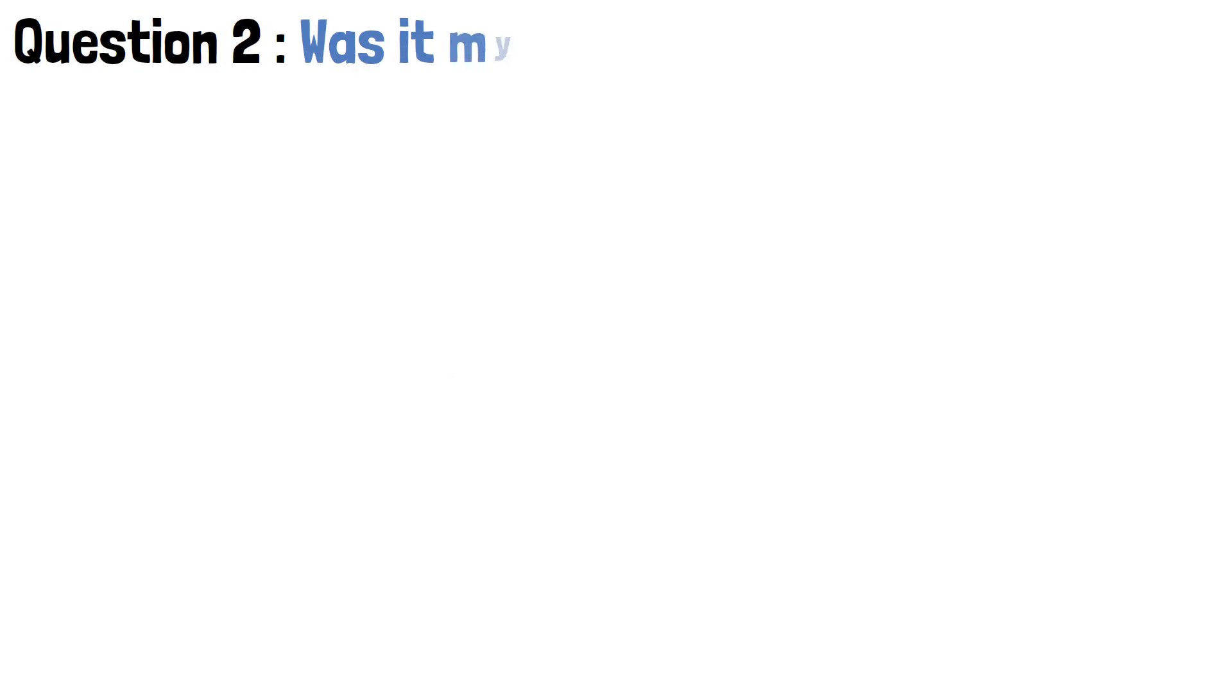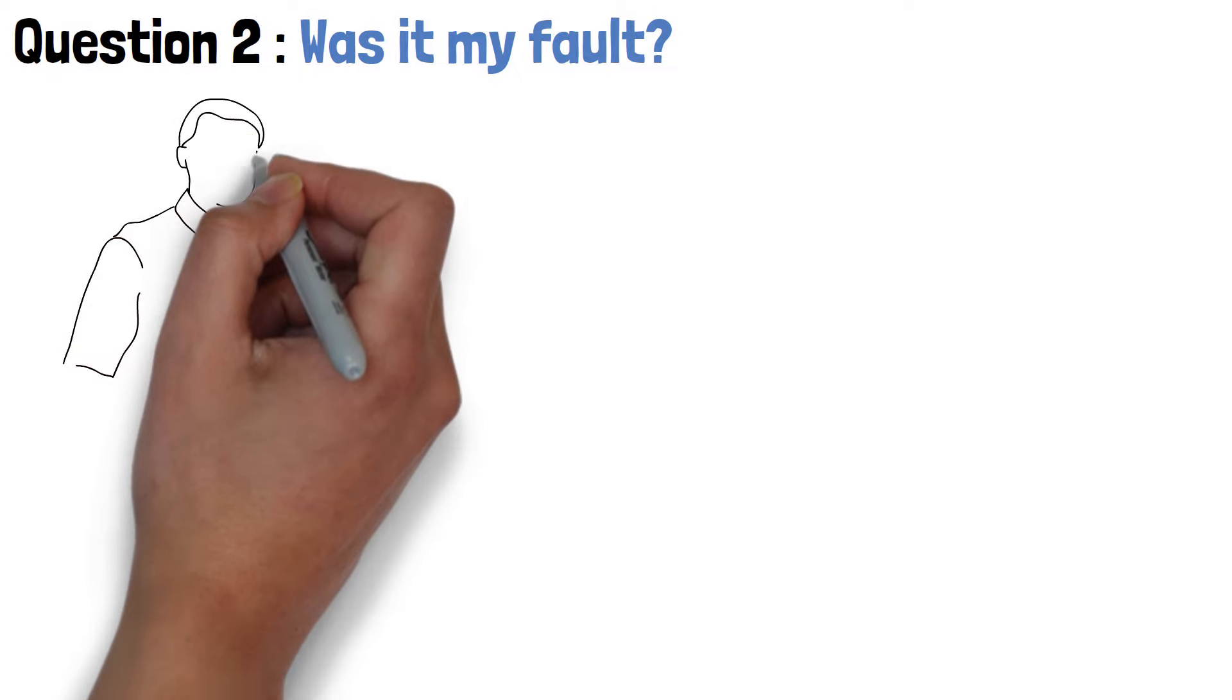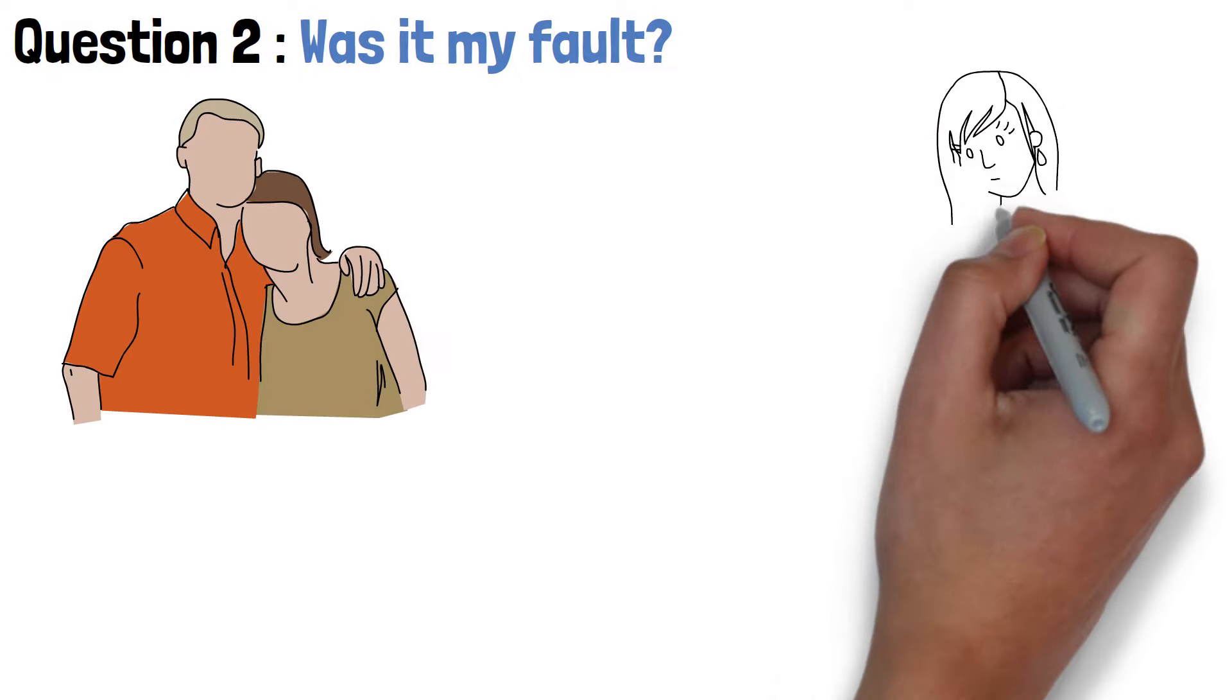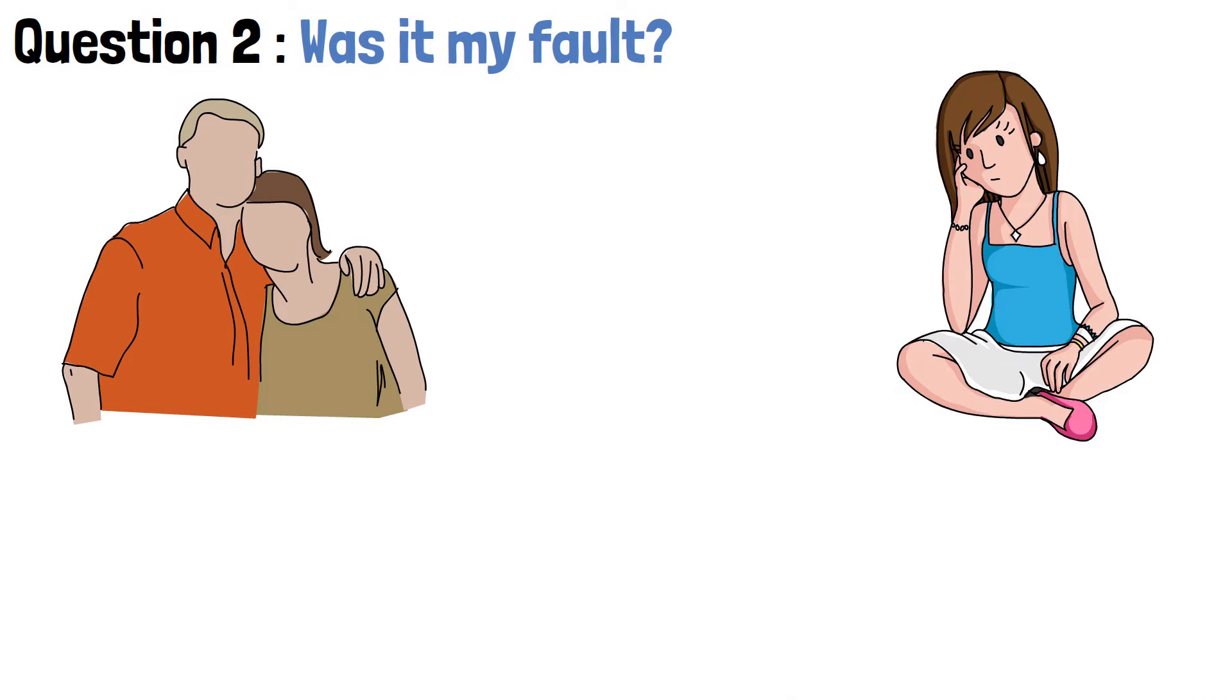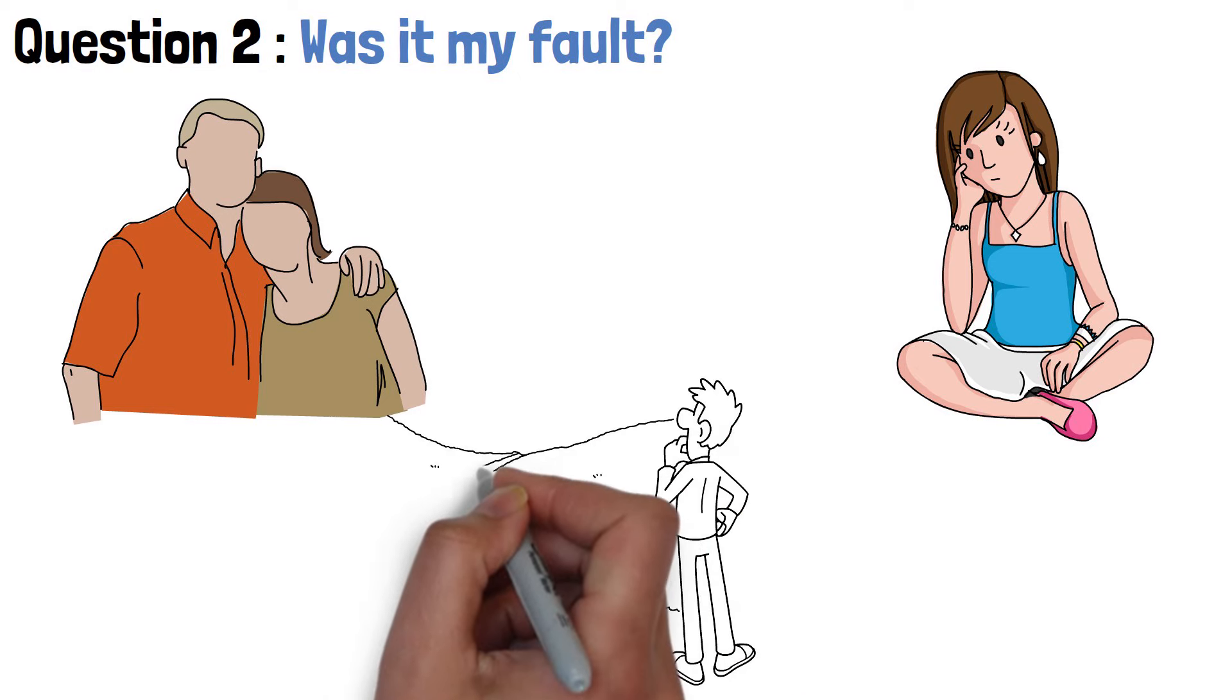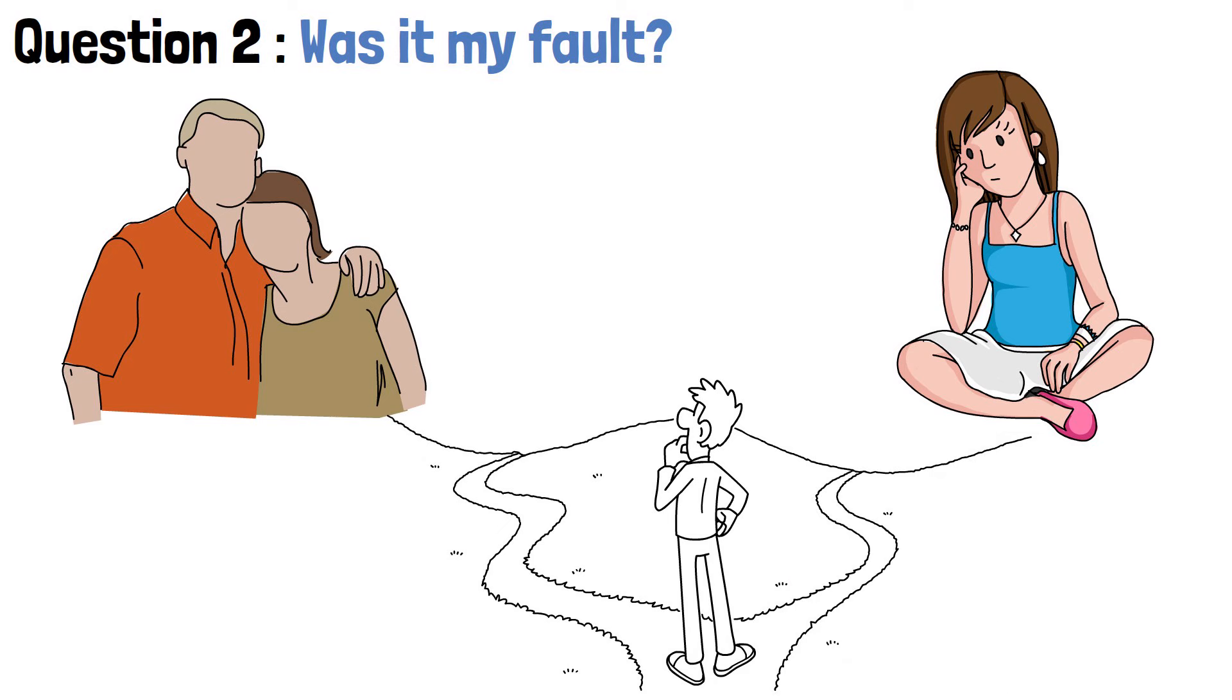Question 2. Was it my fault? It's natural to seek accountability and understand our role in the relationship's demise. Feelings of guilt and self-blame often accompany the end of a relationship. We may replay past events and interactions, scrutinizing our words and actions. But it's important to remember that relationships are a two-way street. While it's healthy to reflect on our behavior and take responsibility for our actions, it's equally important to recognize that relationships are complex and multifaceted.